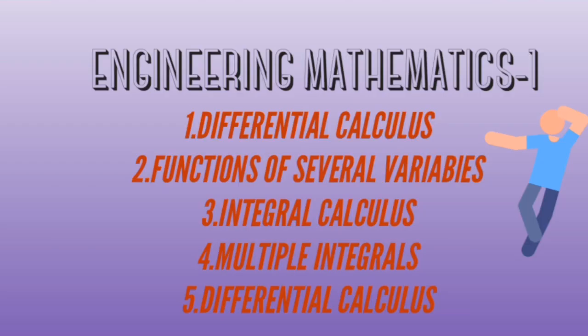Engineering Mathematics 1 has 5 units. The first unit is Differential Calculus, which covers a large syllabus.